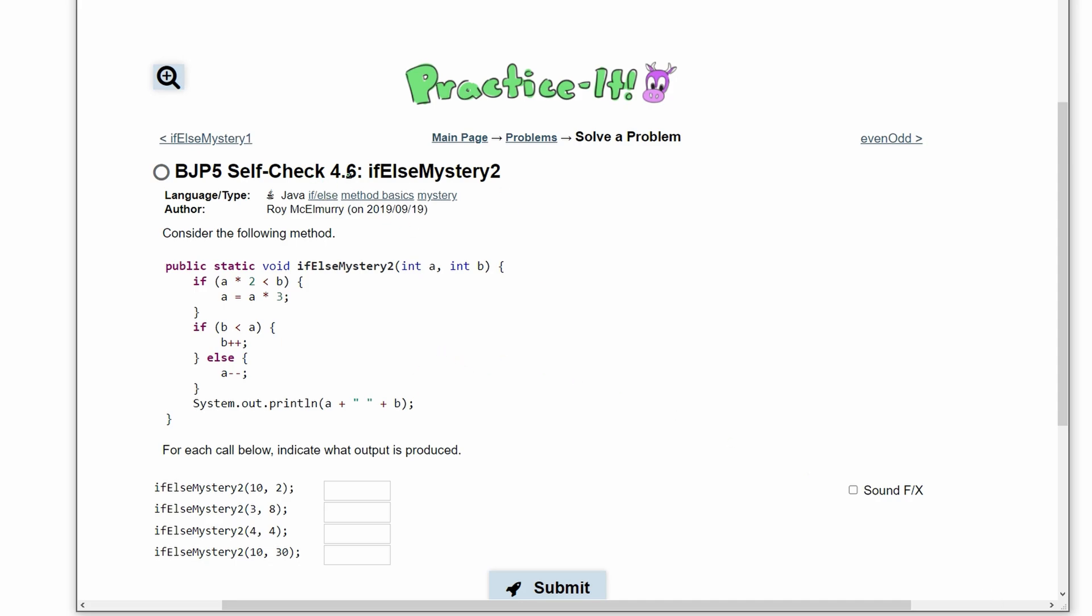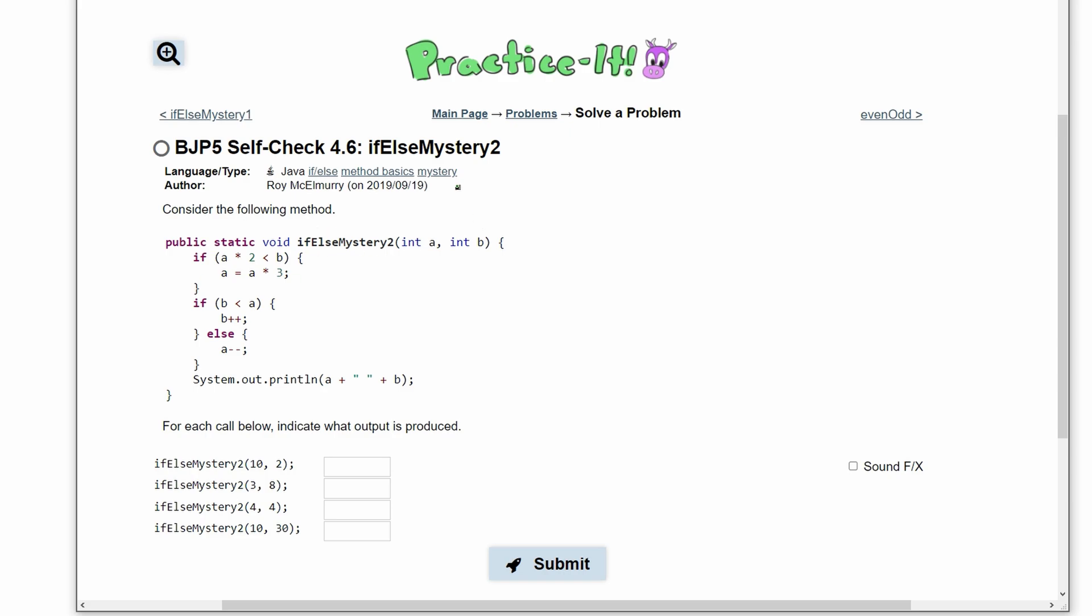For practice-it self-check 4.6, if-else-mystery2. This is basically the same thing as if-else-mystery1, we're just giving new parameters and we're also given new code inside of this method.